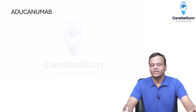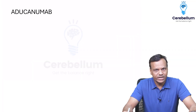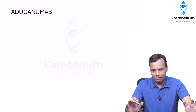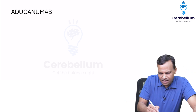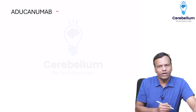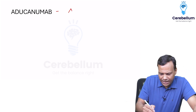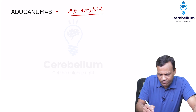Hello everyone. Today's mnemonic is related to a drug called aducanumab. What is aducanumab? It is a monoclonal antibody against A-beta amyloid and it is used for treatment of Alzheimer's disease.